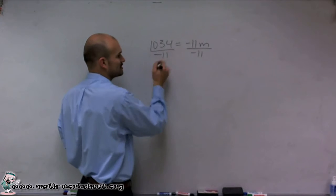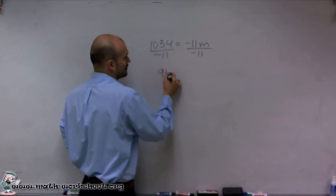So therefore, 1,034 divided by negative 11, carry the 1. I'm going to get 94.